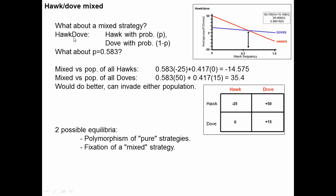What if you had a mixed strategy individual — call them hawk-dove — who sometimes plays like a hawk and sometimes like a dove? Let's say they play hawk 58.3% of the time and dove 41.7% of the time. If that individual enters a population of all hawks, 58.3% of the time they get the negative hawk-hawk result and 41.7% of the time they get zero, giving an average payoff of -14.575. The average hawk in an all-hawk population gets -25, so this mixed strategy does better.